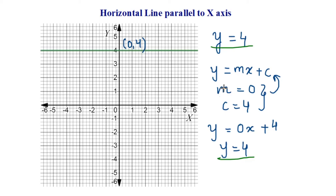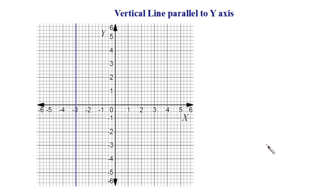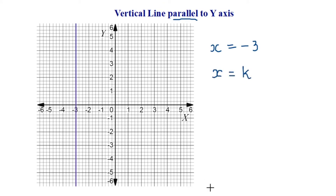Hence, we can create a thumb rule that for any horizontal line which is parallel to the x axis, the equation is given by y is equal to k, where k is any constant. Next, let's figure out the equation of a vertical line which is parallel to the y axis. This vertical line passes through the point x is equal to minus 3. On this line, all the points have an x coordinate of minus 3, and hence logically the equation of this line is x is equal to minus 3. We can create a thumb rule that for any vertical line which is parallel to the y axis, the equation is given by x is equal to k, where k is any constant.